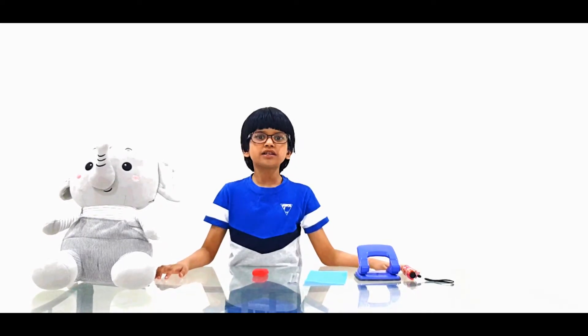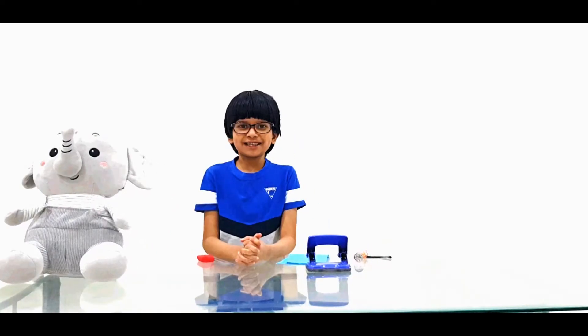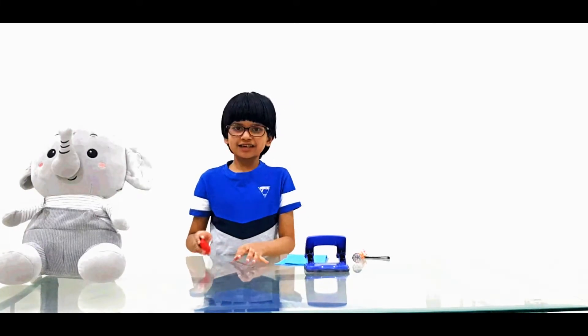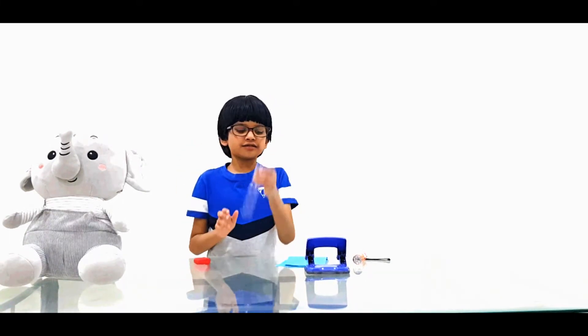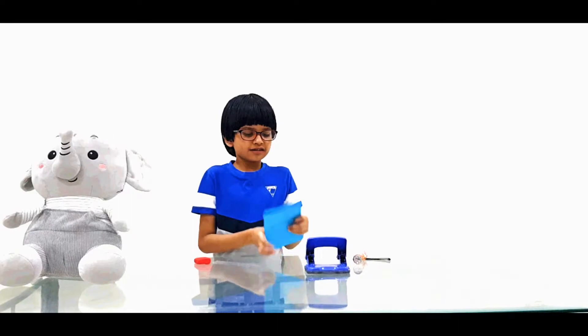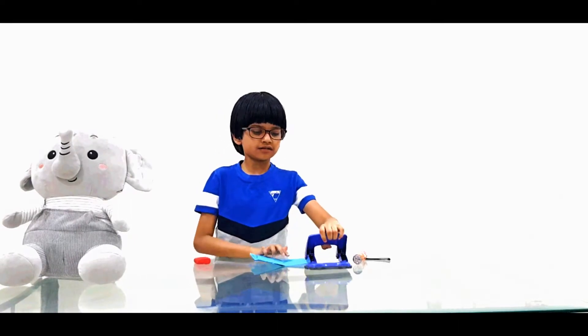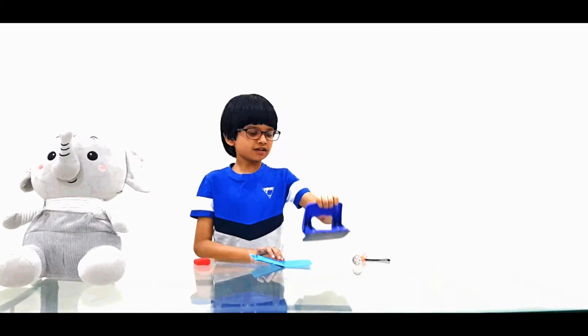Light is defined as a form of energy which makes things visible. Here is cardboard, clay, a ruler, index cards, a hole puncher, and a torch.